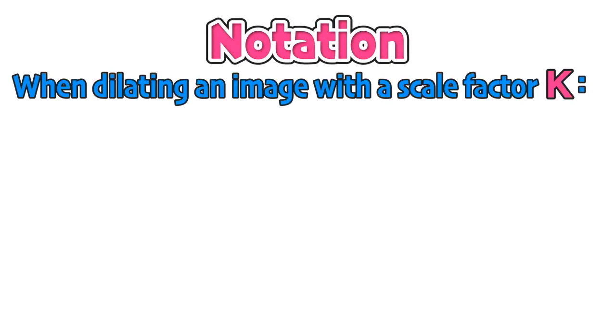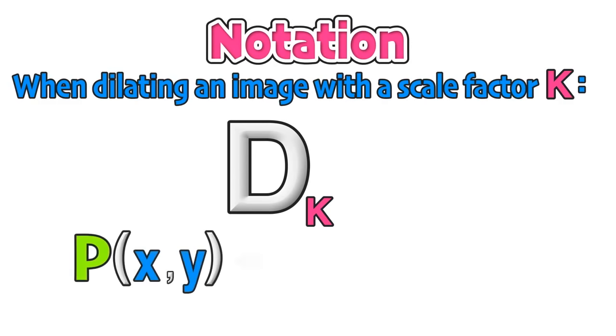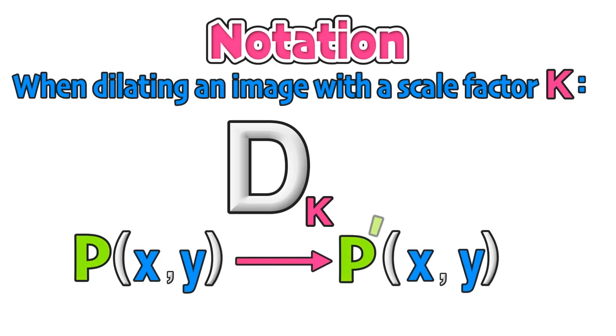When dilating an image with a scale factor of k, we use the following capital D notation. Dilating a point P with coordinates x, y to the new image P prime involves multiplying the scale factor by both the x and y coordinates. The new x coordinate will be the product of the scale factor in x, the new y will be the product of the scale factor in y.